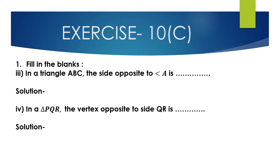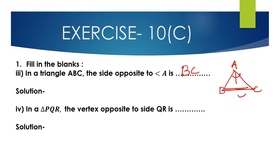Question 1, third bit: in triangle ABC, the side opposite to angle A is dash. Looking at triangle ABC, angle A is opposite to side BC. So the side opposite to angle A is BC.